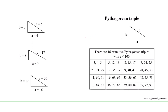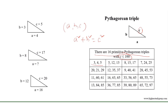A Pythagorean triple is a set of integers A, B, C such that A squared plus B squared equals C squared. There are 16 primitive Pythagorean triples with hypotenuse less than or equal to 100. For example: 3, 4, 5; then 5, 12, 13; then 8, 15, 17; and so on.